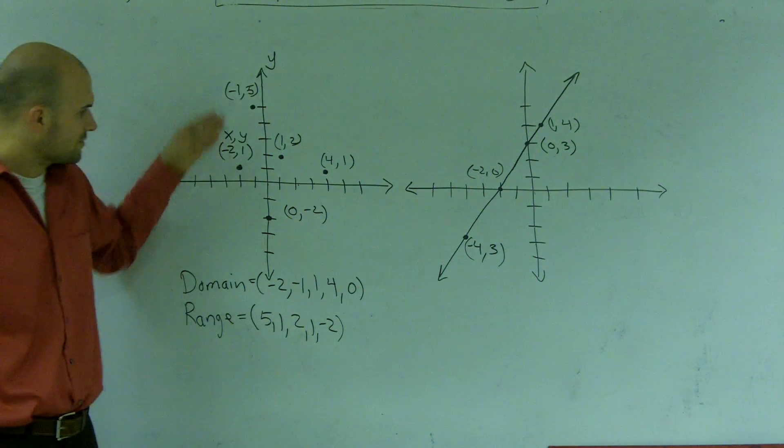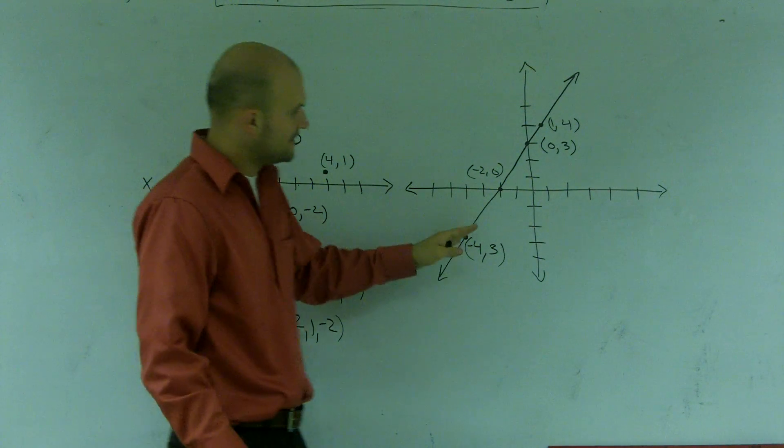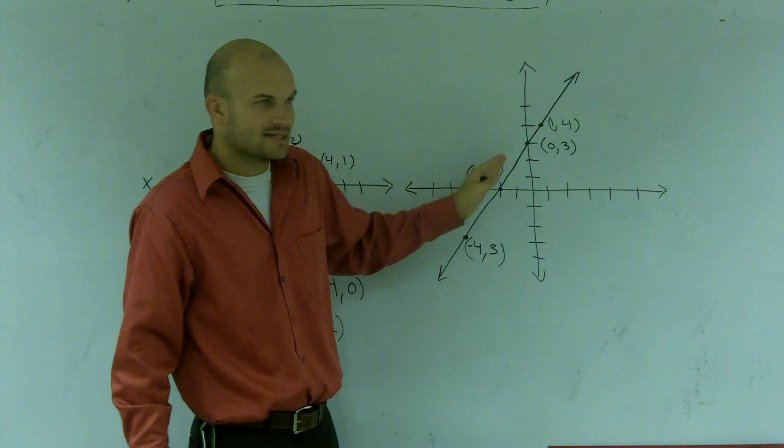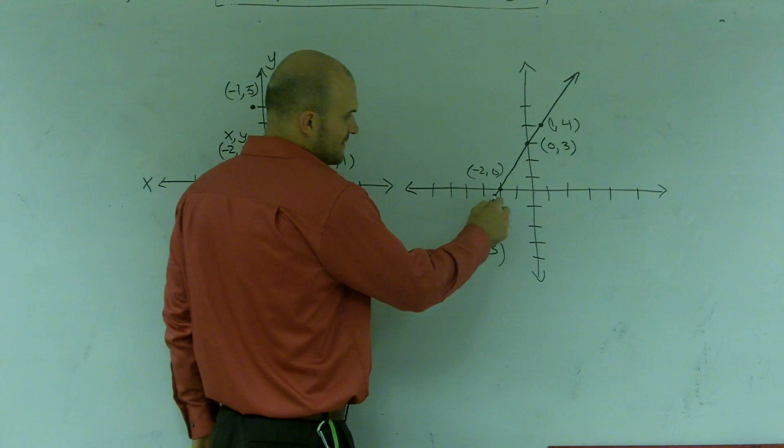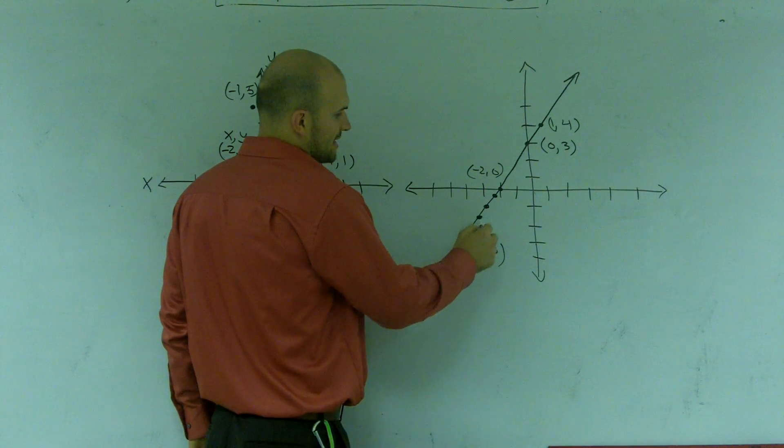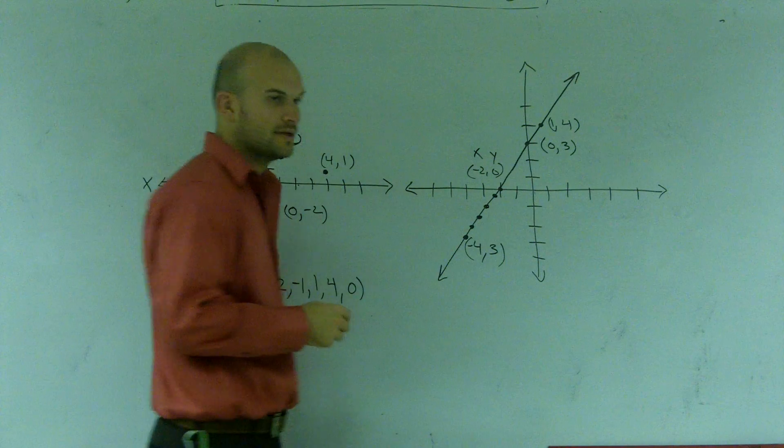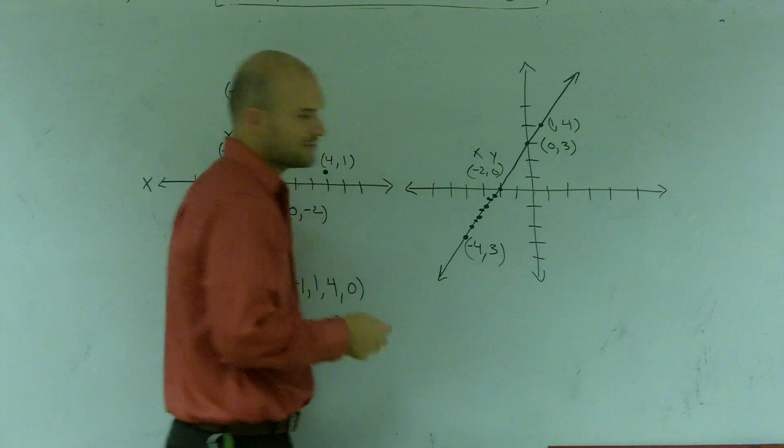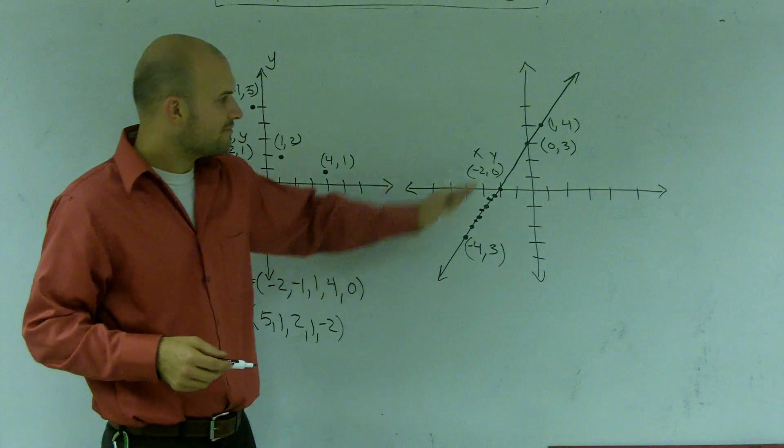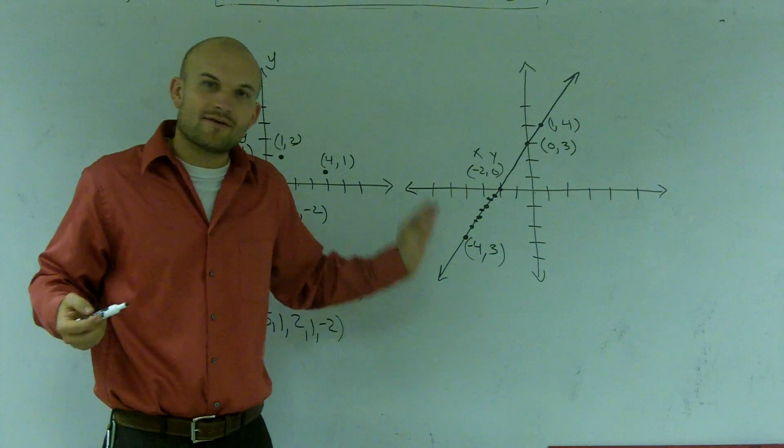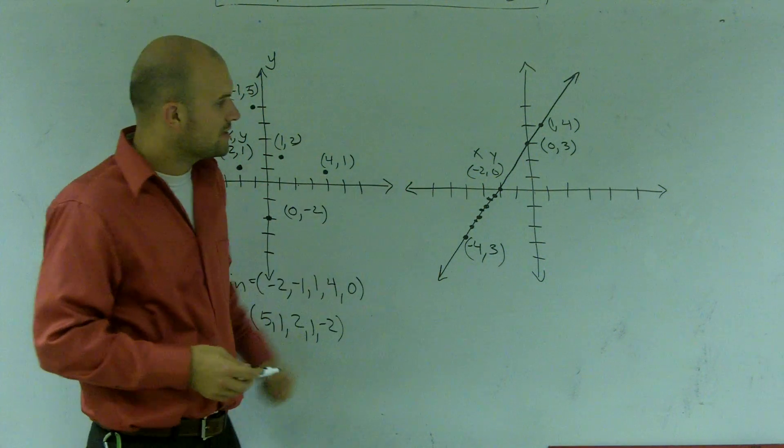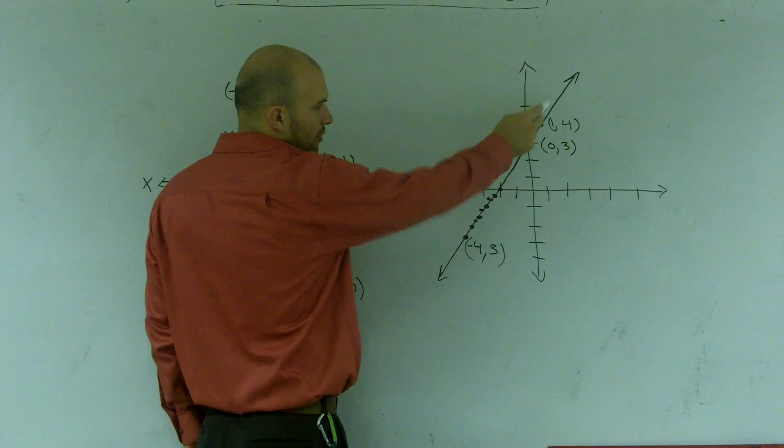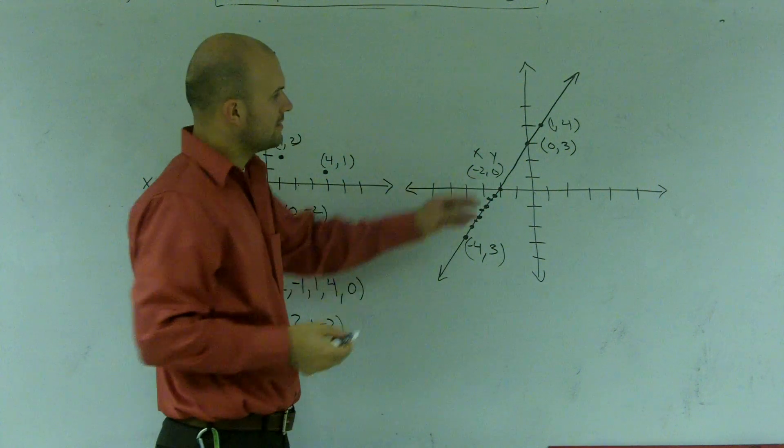Over here, we obviously know these are the only points on there. But what you notice between here is between each and every one of these points, they're connected. Meaning there's infinite number of coordinate points. I only picked out a couple of them. But there's infinite many points between these two points. So therefore, I can't possibly label every single coordinate point up there because there's infinite amount.